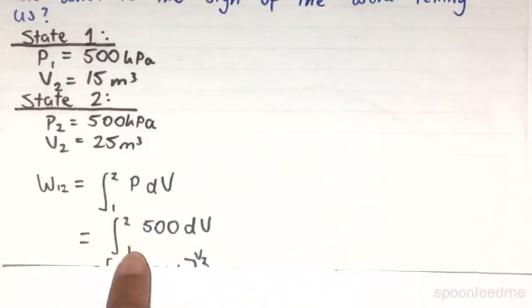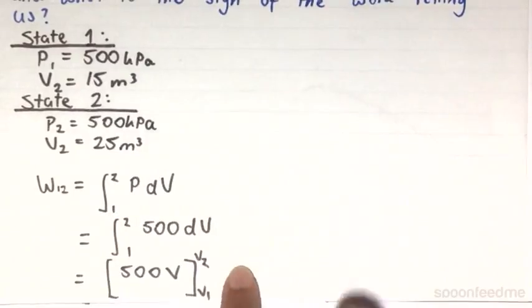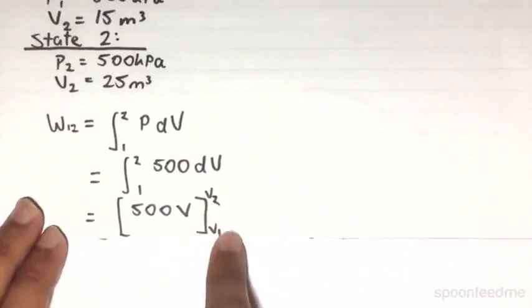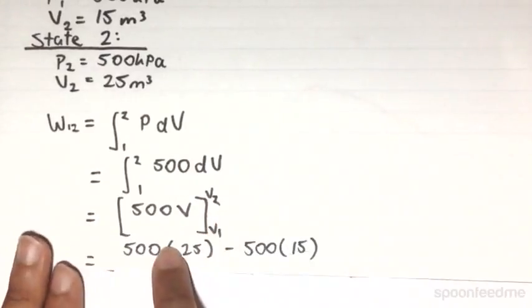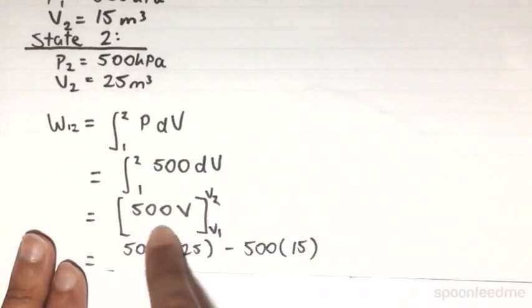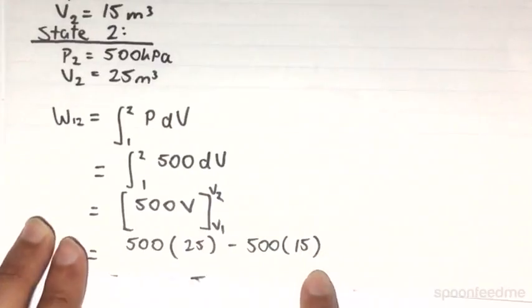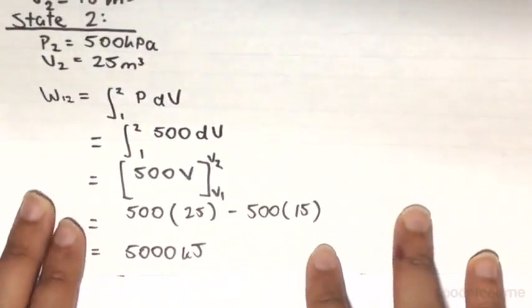P is a constant 500, so evaluating the integral we get 500V between V2 and V1. So it's going to be 500 times V2 minus 500 times V1, and this will give us 5,000 kilopascals.